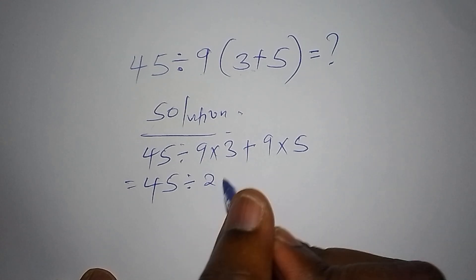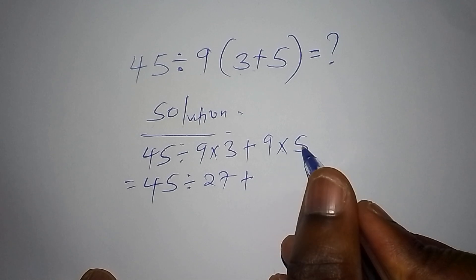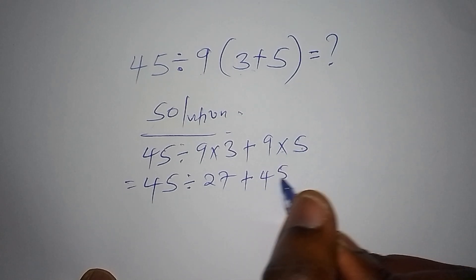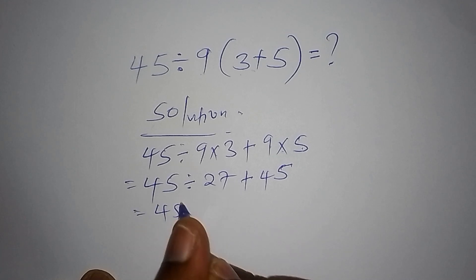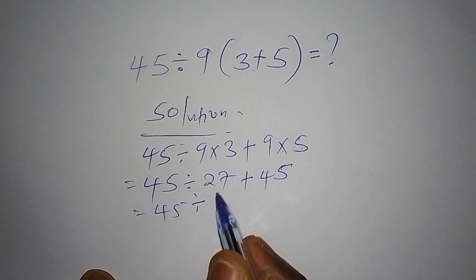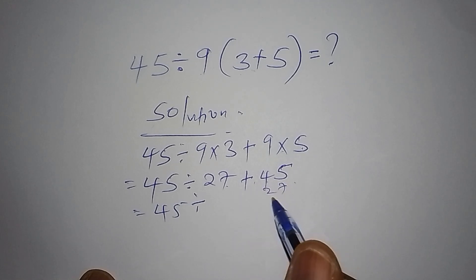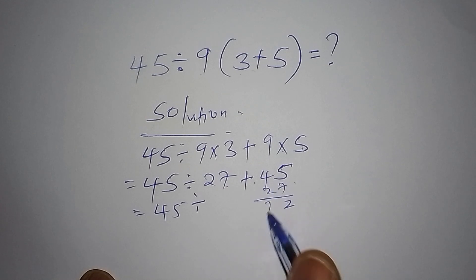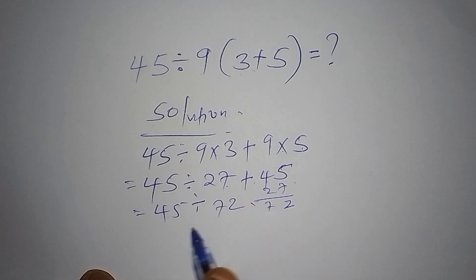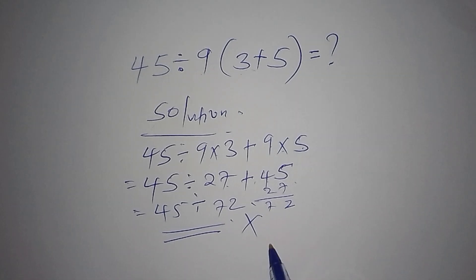If you do this, let's check the answers you shall arrive at. We'd have 45 divided by 9 multiplied by 3 is 27, then 27 add to 9 multiplied by 5 which is 45, giving 45 divided by 27 added to 45, which totals 72. So 45 divided by 72 — that is the wrong answer. Don't ever try this method.